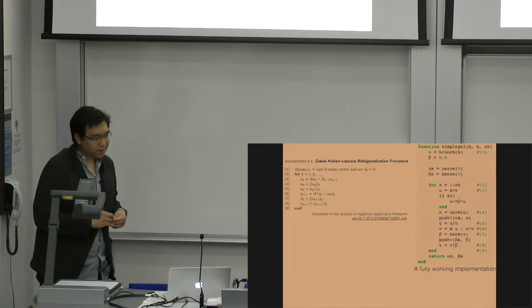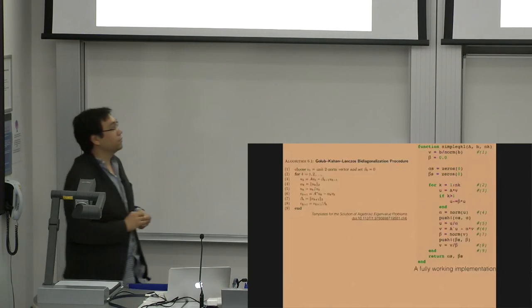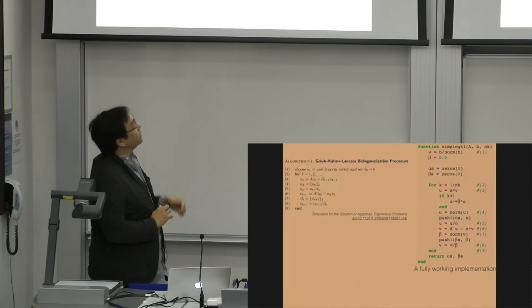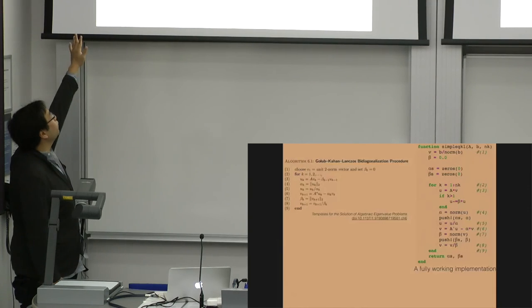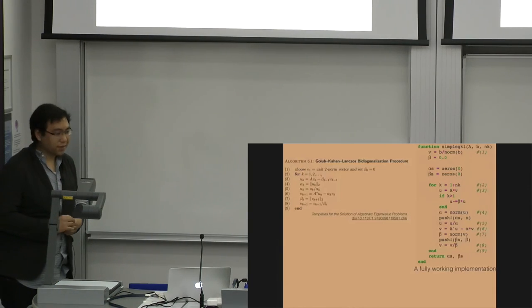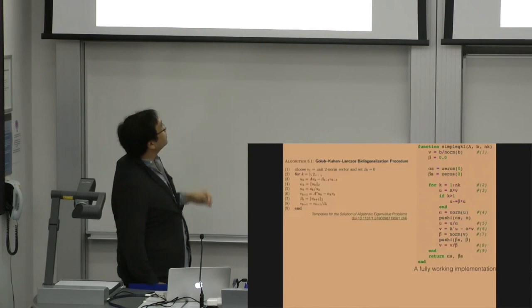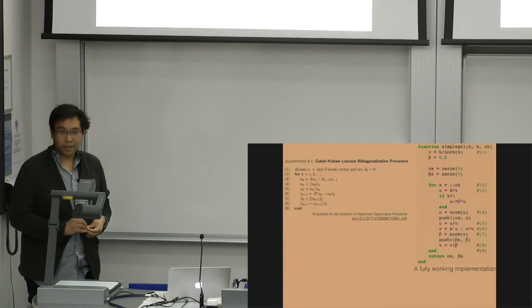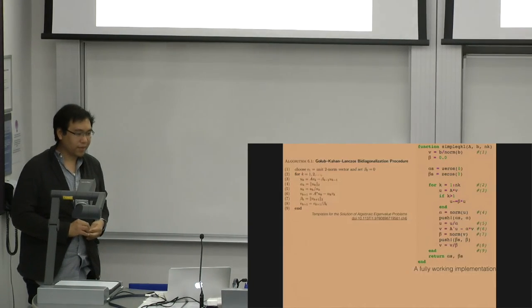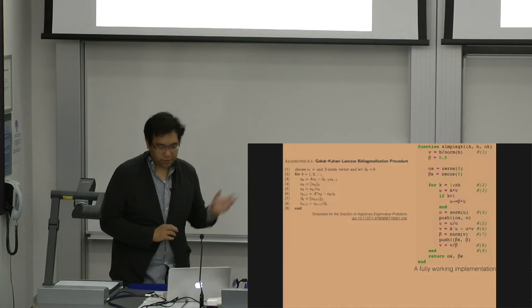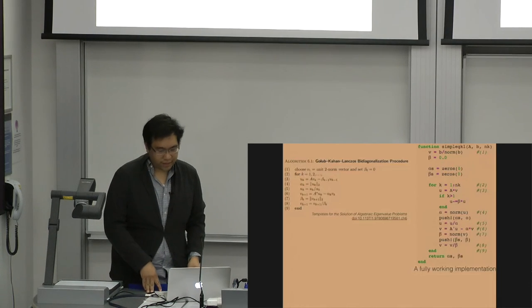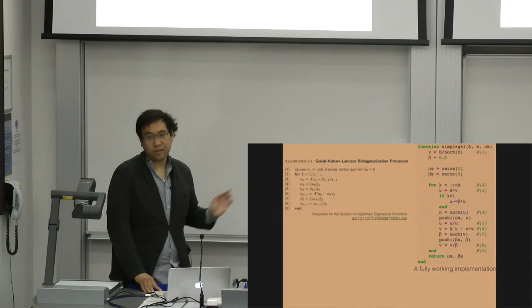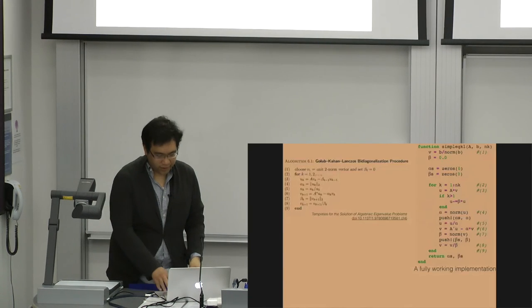Sources of noise in this problem will focus on just one, which is the population stratification. And this is a fancy word for saying that because there are different subpopulations in the human race, that Asian populations have black eyes and Scandinavians have blonde hair and so on and so forth. These are all variations that exist in the data, which we don't think are relevant for a disease state. In linear algebra terms, really what we're looking for is low rank structure in the data with large variance.